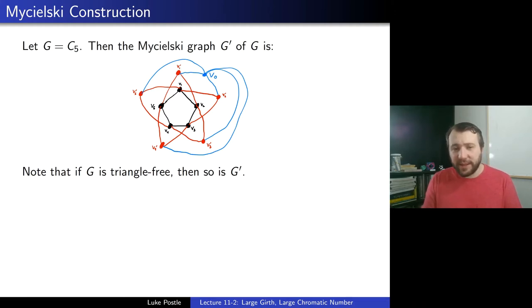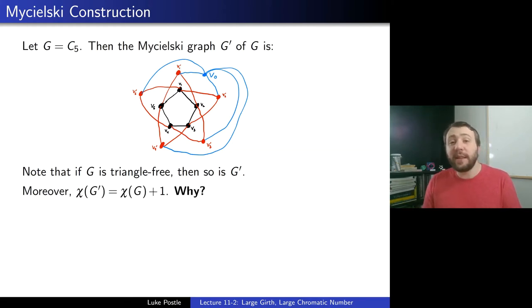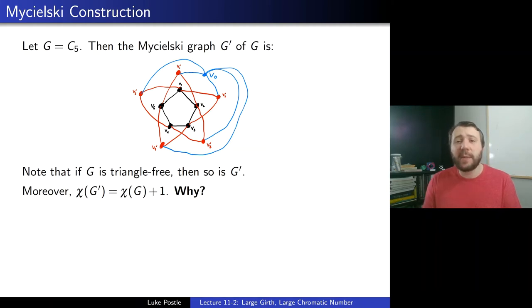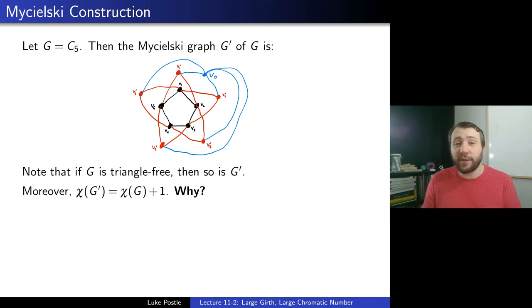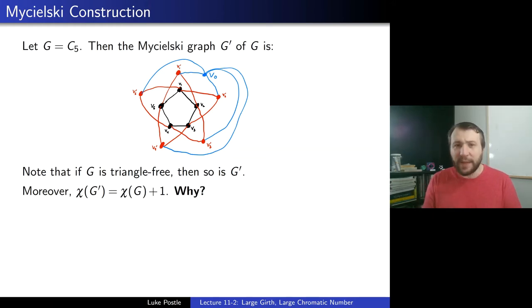More interestingly, the chromatic number of G prime has actually gone up — it's χ(G) plus one. You might want to pause and think a moment. First, convince yourself it is at most that number, because you could color the original graph with χ(G) colors, take that coloring, apply it also to the primes, and then give v0 the new color χ plus one. But the real trick is why can't you color with χ(G) colors?